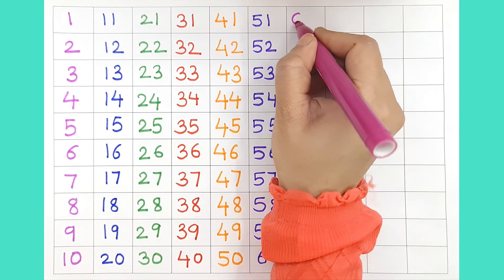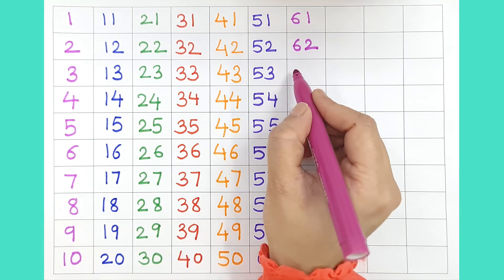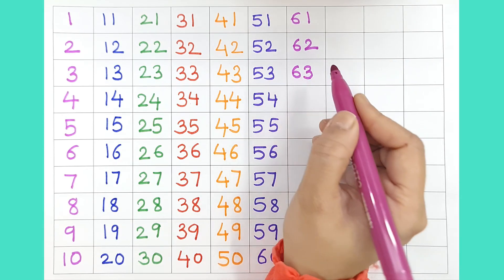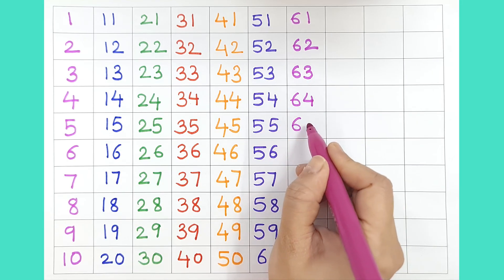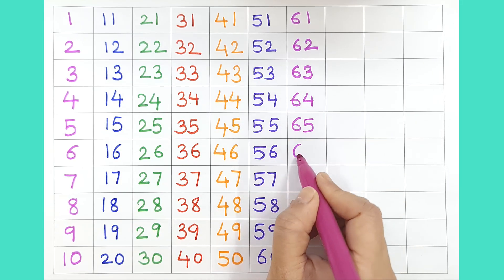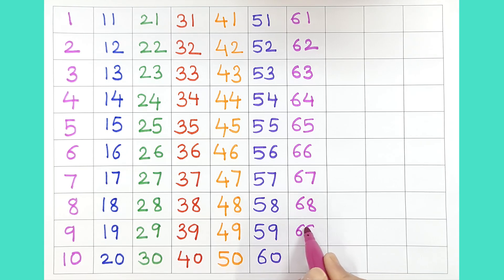Next is 61, 62, 63, 64, 65, 66, 67, 68, 69. And the number 70, 70.